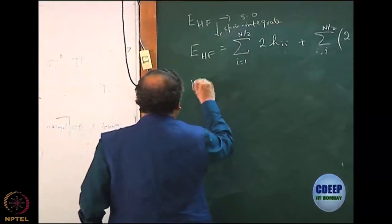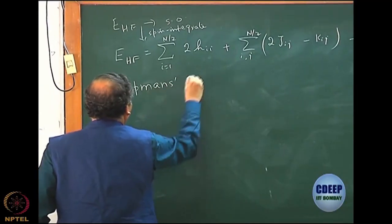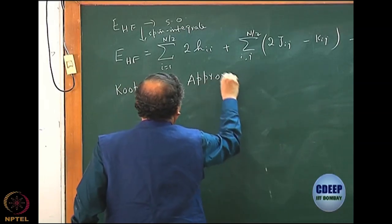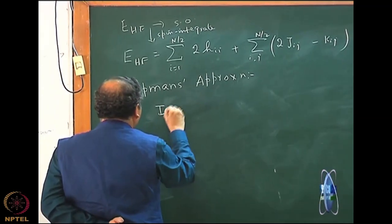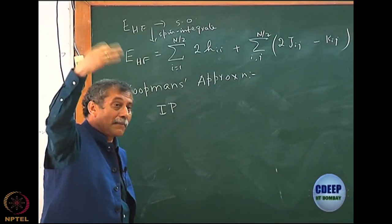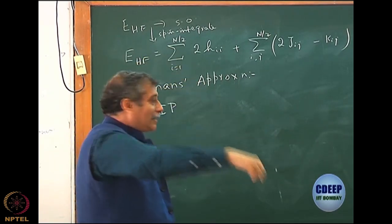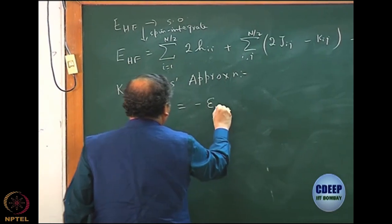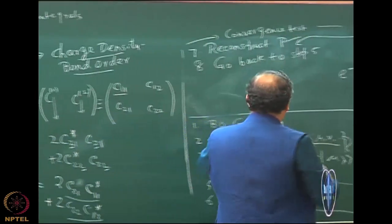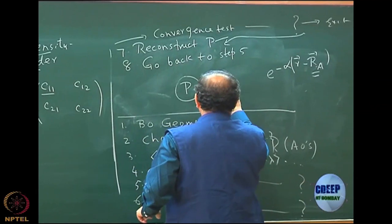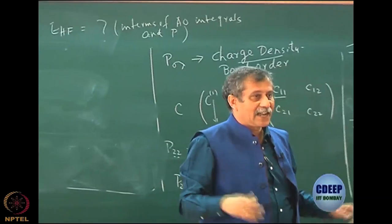Let us go back to Koopmans again. I hope you remember Koopmans' approximation: if you take out an ionization from one molecular orbital - I am talking of molecular orbital, not atomic orbitals - then the energies are minus epsilon. Even when doing FC equal to SC, I get the eigenvalues, which are actually molecular orbital energies.